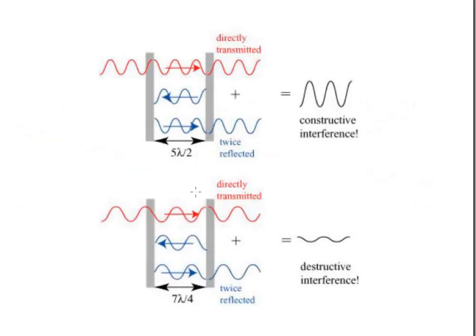For example, when the cavity is of length 5λ/2, the neighboring contributions all add up and emerge from the interferometer — constructive interference. But when the cavity is of length 7λ/2, the neighboring contributions cancel, and the overall effect is that the interferometer has very weak light output — destructive interference.